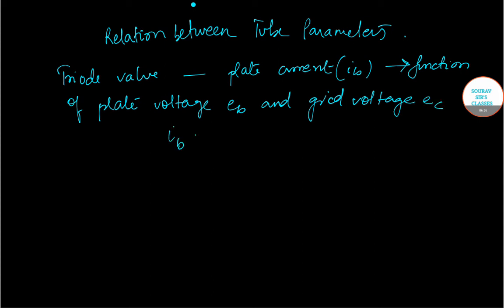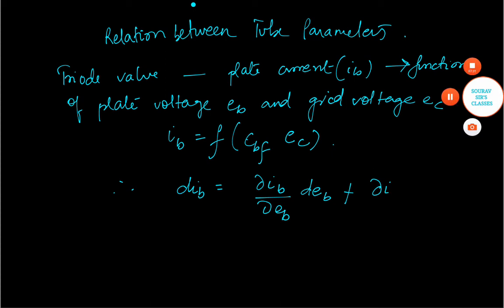Let us write it in functional form using notation. So it becomes a function of EB and EC. Therefore, DIB will be del IB by del EB into DEB plus del IB. I need to make some correction. This will be just EB.